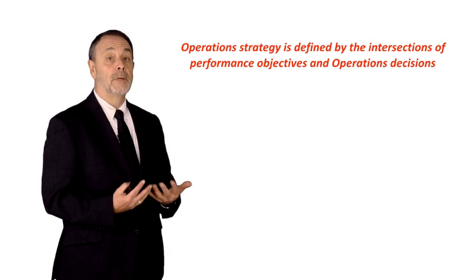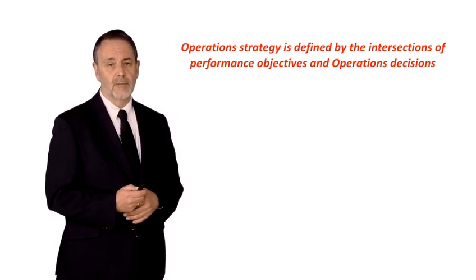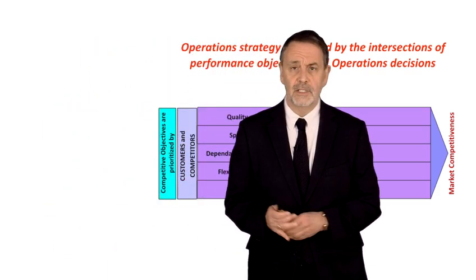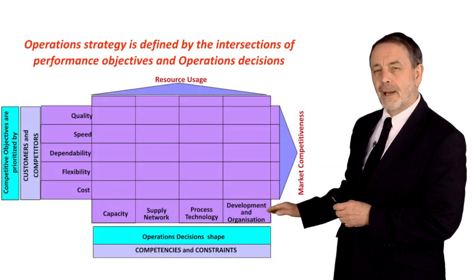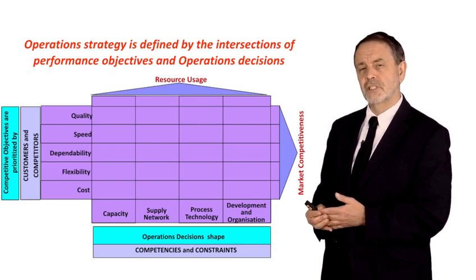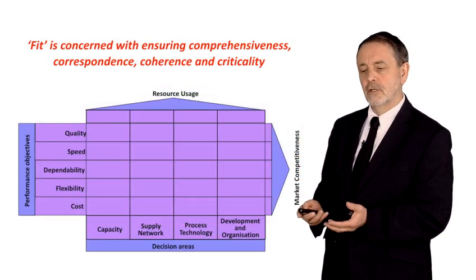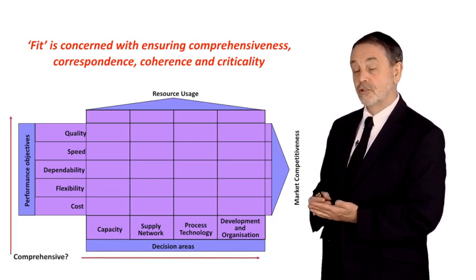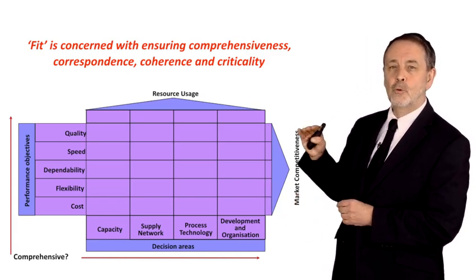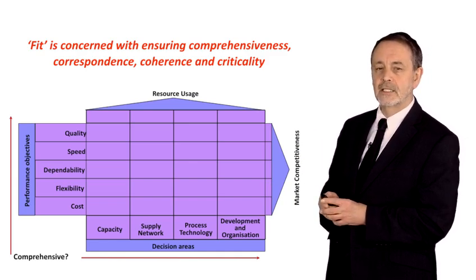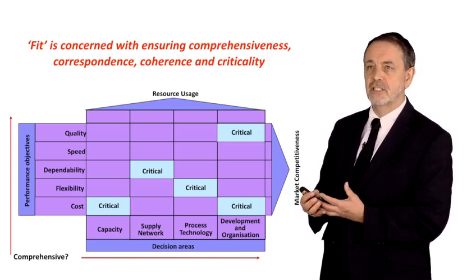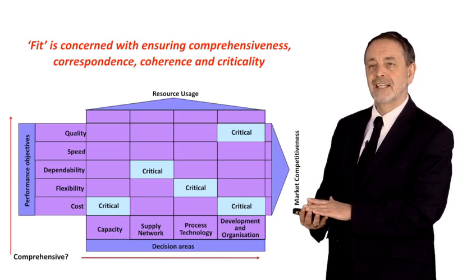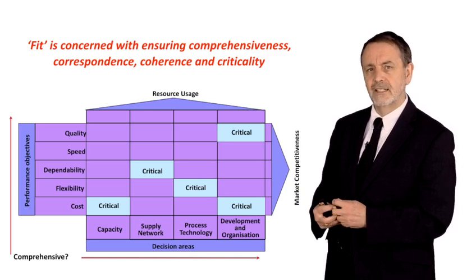So how do we analyze an operations strategy? This is where the operations strategy matrix comes into play. We need to understand how we compete in our marketplace — the quality, speed, dependability, flexibility, and cost dimensions. When reviewing or developing an operations strategy, the first question to ask is: is it comprehensive? Have we addressed all four decision areas and do we fully understand our competitive priorities? What are the order winners in each market segment? Secondly, what are the parts of this matrix that are critical? For example, the size and location of our facilities is absolutely critical to supporting our cost competitiveness.